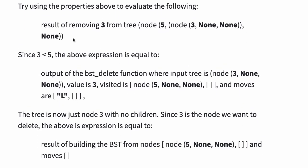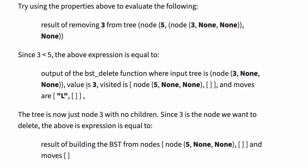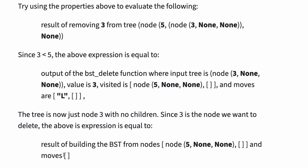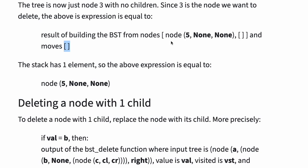For example, let's evaluate this expression: the result of removing 3 from the tree node 5 with left child node 3. Since 3 is less than 5, this equals the output of the BST delete function where input tree is node 3, value is 3, visited is node 5, and moves are L. The tree is now just node 3 with no children. Since 3 is the node we want to delete, this equals the result of building the BST from nodes node 5 and moves empty, which equals node 5.